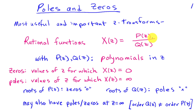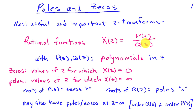The roots of P of Z — the places where P of Z equals zero — are going to result in X of Z also being zero. So the roots of P of Z are zeros of X of Z, and we'll denote those in our Z-plane plots with a little circle. On the other hand, whenever Q of Z goes to zero, X of Z is going to blow up. So the roots of Q of Z are the poles of X of Z, and those are denoted in our Z-plane by a little x.